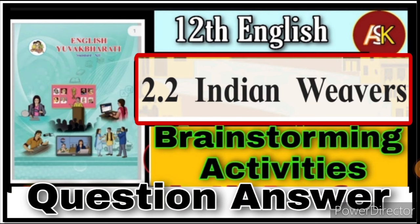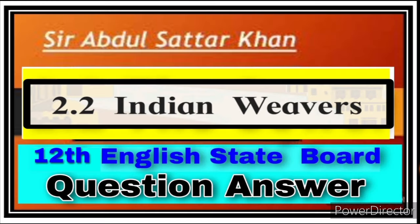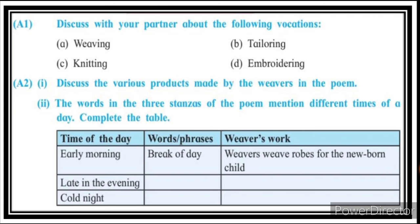Good morning friends, welcome to our YouTube channel. Today we cover 2.2 Indian Weavers, 12th English, brainstorming activities and question answers. The brainstorming activities include: discuss with your partner about the following vocations — weaving, tailoring, knitting, embroidering; discuss the various products made by the weavers in the poem; and the words in the three stanzas mention different times of day — complete the table.